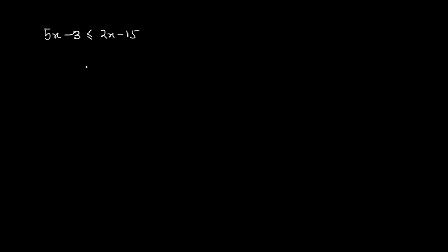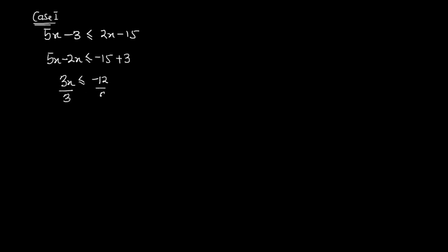Just like solving linear equations, we first group like terms. In Case 1, I maintain the 5x on the left and send the 2x to the left side, giving 5x minus 2x, less than or equal to minus 15. Then I send the negative 3 to the other side, so it becomes plus 3. So 5x minus 2x gives 3x, and minus 15 plus 3 gives minus 12. I then divide both sides by 3.